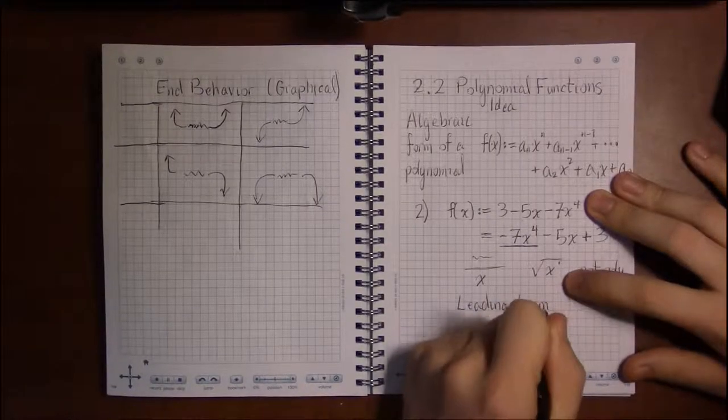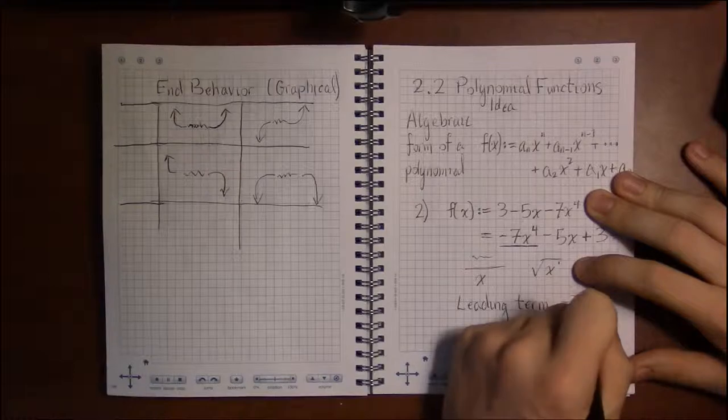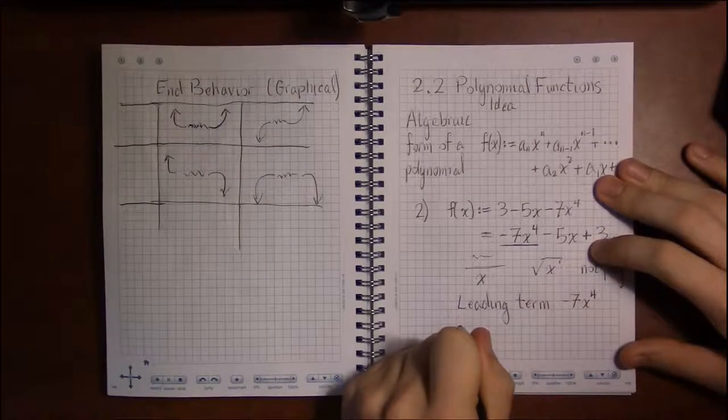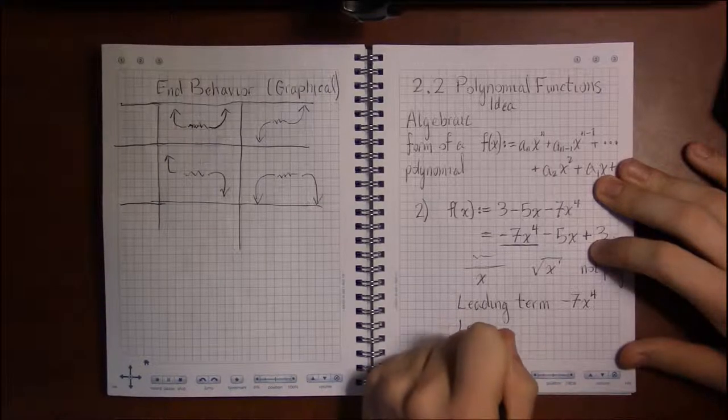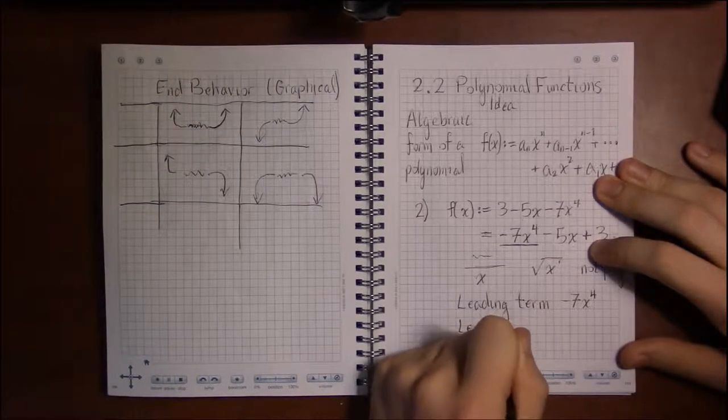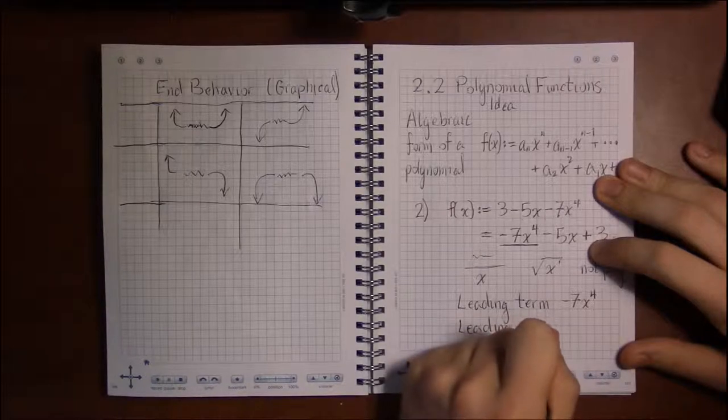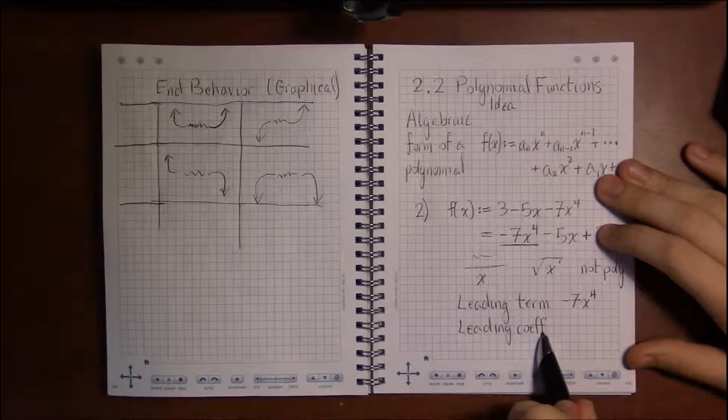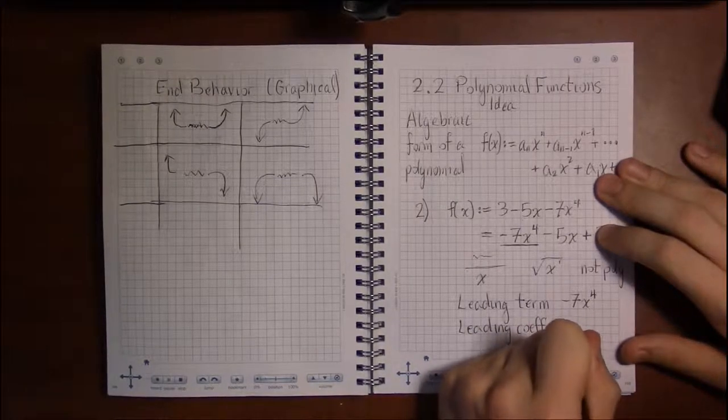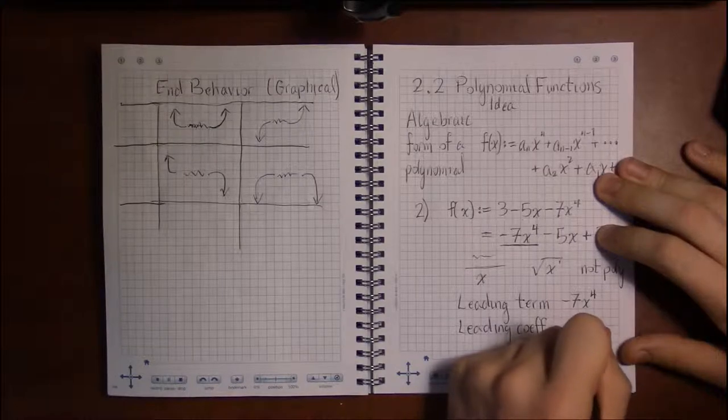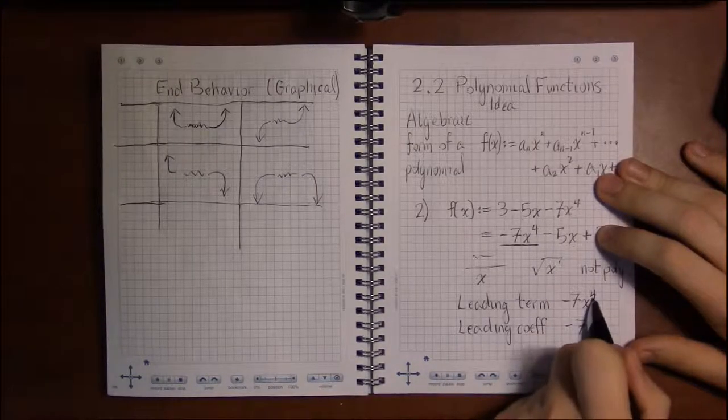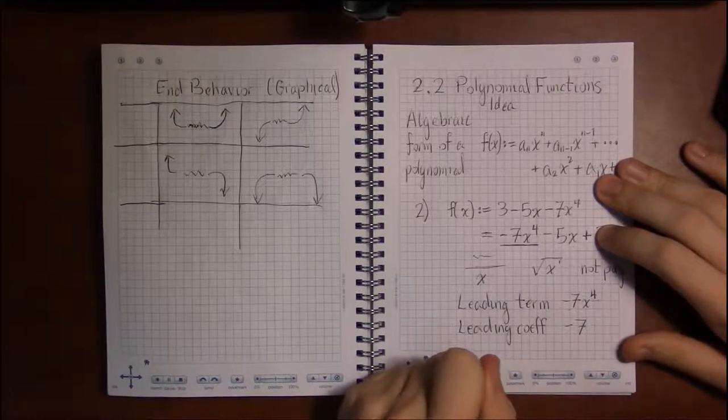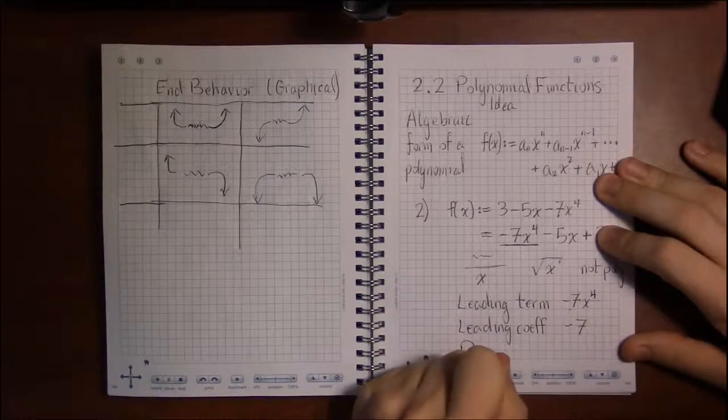And then we have something called a leading coefficient, which is simply the number in front of x in the leading term. So the leading coefficient, just abbreviating here, is -7. It's the number in front. And then the 4 – the name for this 4 is the degree. We say that the degree of f(x) is the degree of its leading term, it's 4.